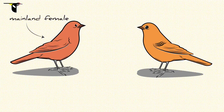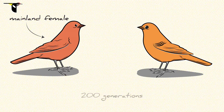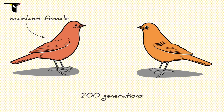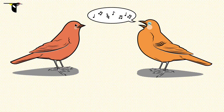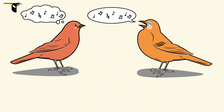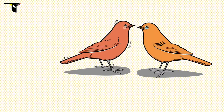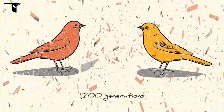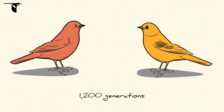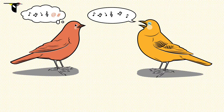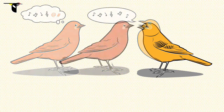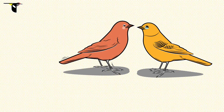If we introduce a female from the mainland species to a potential mate from the island after 200 generations in isolation — about 400 years in bird terms — will they mate? It appears that these two still recognize each other as members of the same species. How about after another thousand generations of isolation? Now the female finds this island male's song a bit strange, but she still chooses to mate with him.